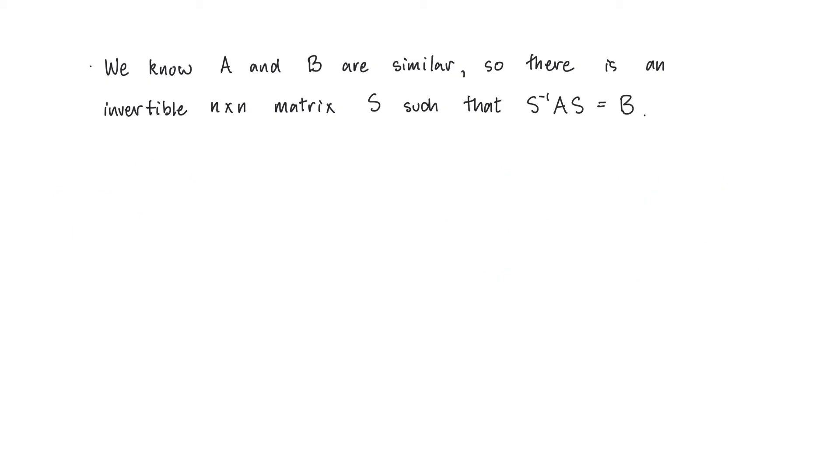We know that A and B are similar, so there's an invertible matrix S such that S inverse times A times S is equal to B. Note that this means that A times S is equal to S times B. This doesn't seem like a huge change, but this is actually a really common trick. Instead of having S and S inverse around, I now just have S. Let's see why this is useful.